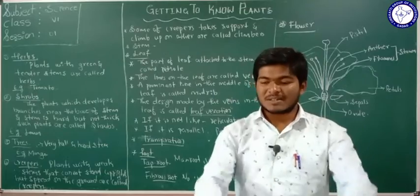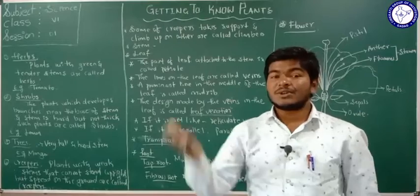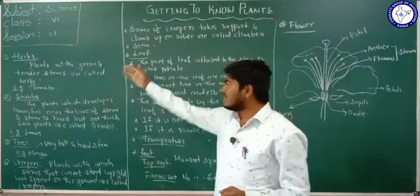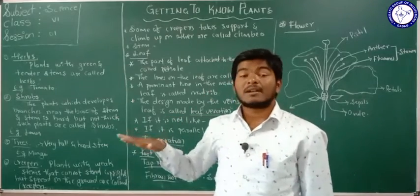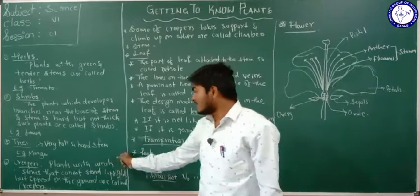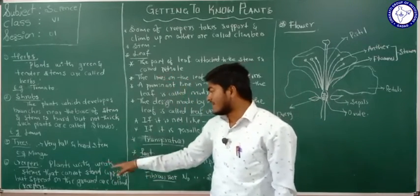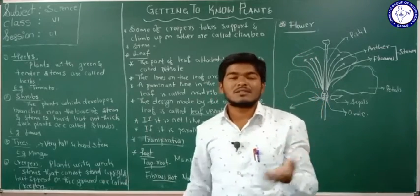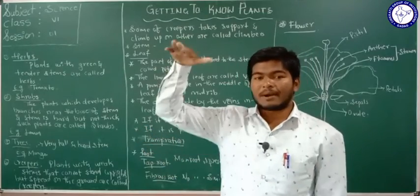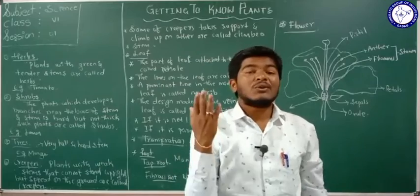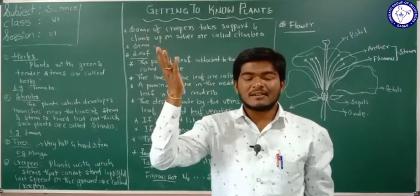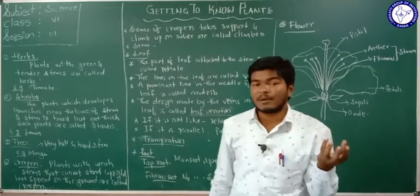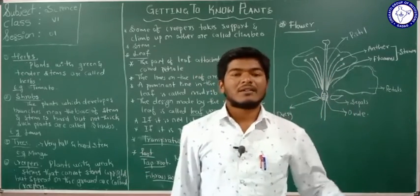Some plants have weak stems and cannot stand upright. In the previous three cases, plants have a strong stem so they grow up, but some plants don't have a strong stem. Plants with weak stems cannot stand upright but instead spread on the ground. Such plants are called creepers. For example, the cucumber creeper spreads over the land because its stem does not have the capacity to grow upright. You can see different types of creepers on the ground or in a field.